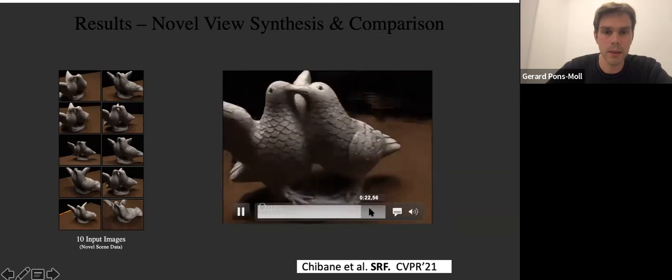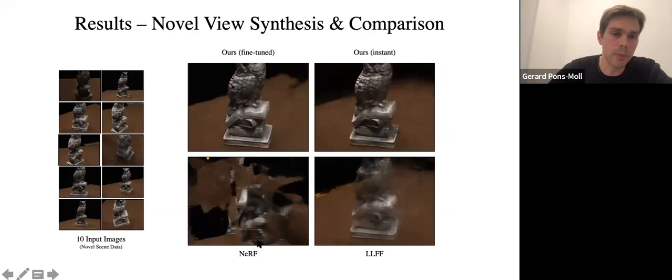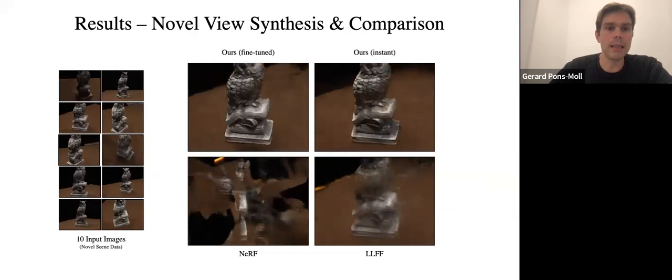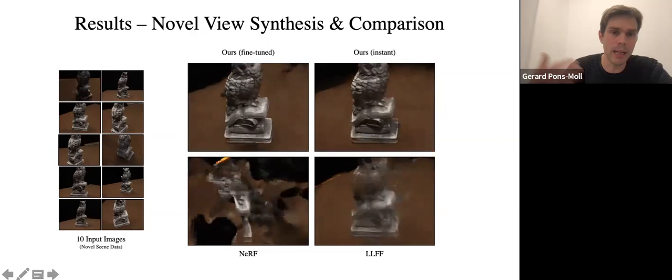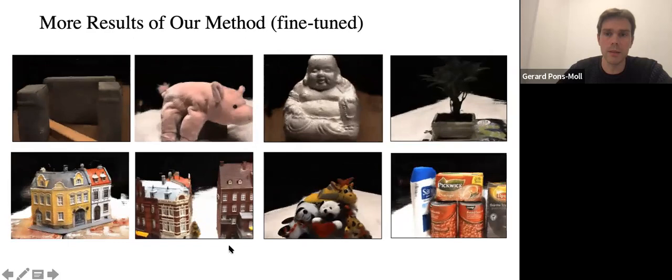How does this compare to standard NeRF or LLFF, which were the baselines at that time? NeRF fails for many scenes because it needs many more images to produce a reasonable scene representation. With only 10 images, NeRF many times just doesn't learn anything meaningful. Instead, ours can produce a pretty good novel view synthesis result by just looking at these 10 images without even having to train on them. Here are more results of our method generalizing to new scenes, using only 10 images.